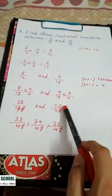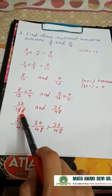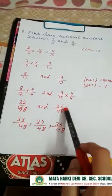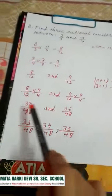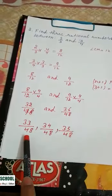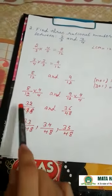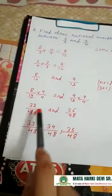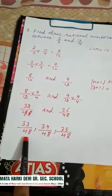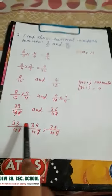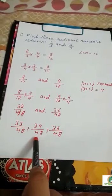Between 32 by 48 and 36 by 48, the rational numbers in between are: after 32, the next number is 33. So 33 by 48, 34 by 48, and 35 by 48 are the three rational numbers.